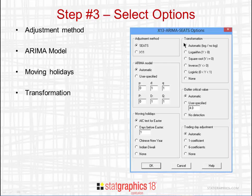There's a field in the top right section of the dialog box where you can specify the transformation to apply to the data. One choice is to have the program automatically try logs and no logs and pick whichever is best. You can specify a logarithm if all values are greater than zero, a square root if all values are greater than or equal to zero, an inverse if you have non-zero values, and a logistic transformation if all values are between zero and one.